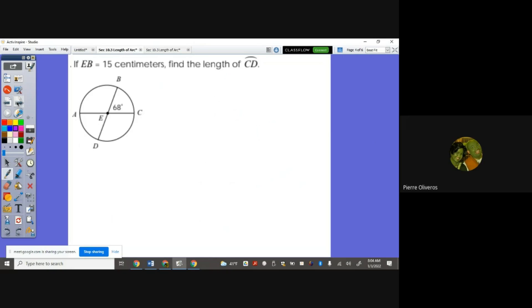Next, if EB is 15 centimeters, find the length of arc CD. So this is the length we're looking for, the length of arc CD. We know that this one here is the diameter, so half of that one is the radius. Also, EB is 15, therefore all of them have a radius of 15. So I know the radius is 15 centimeters. But we need to know the central angle. The central angle, if this is 180, that's 68.